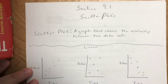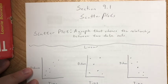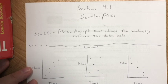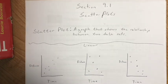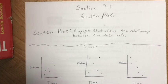Chapter nine is about data analysis and statistics. Section one covers scatter plots — a scatter plot is basically a graph that shows the relationship between two data sets, comparing two things to see if there is a relationship.